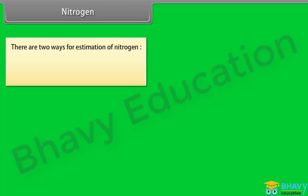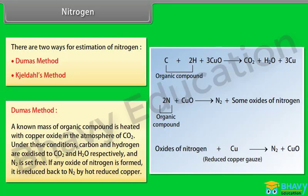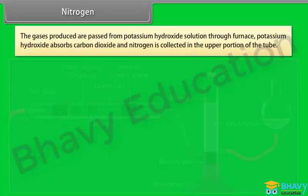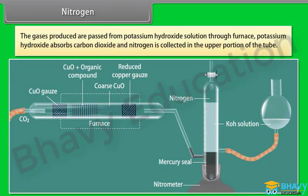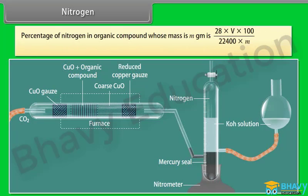Quantitative analysis — Nitrogen, Dumas Method: A known mass of organic compound is heated with copper oxide in an atmosphere of carbon dioxide. Carbon and hydrogen are oxidized to CO₂ and water respectively, and nitrogen is set free. Any oxide of nitrogen formed is reduced back to nitrogen by hot reduced copper. The gases are passed through potassium hydroxide solution; KOH absorbs CO₂ and nitrogen is collected in the upper portion of the tube.